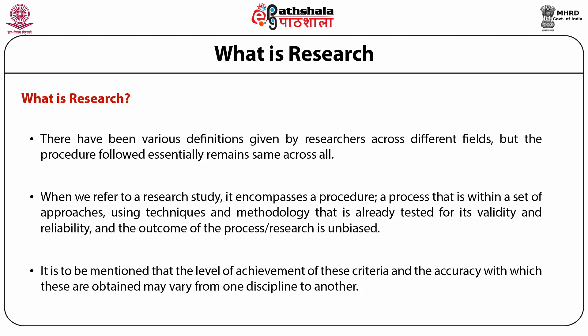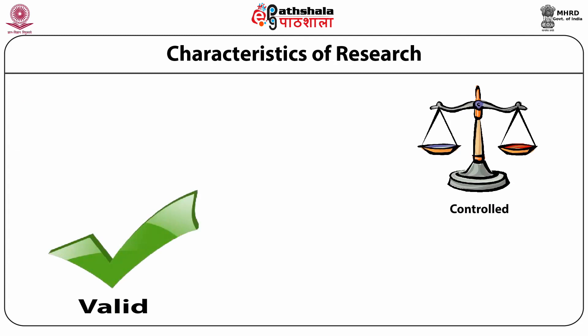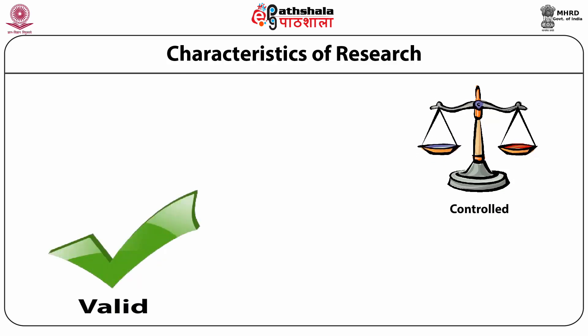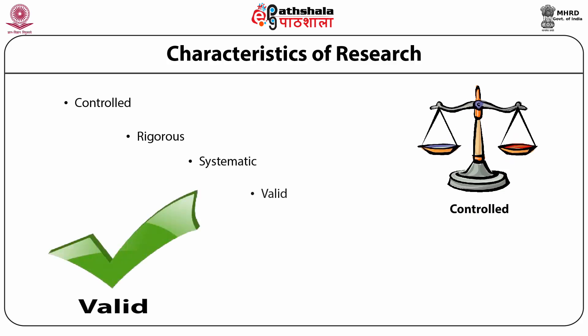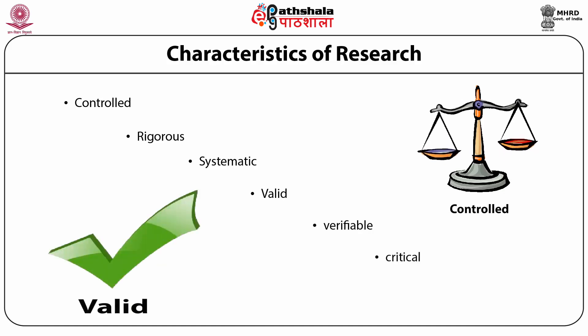However, the complete absence of the above-mentioned criteria does not qualify an activity to be labelled as research. Let us look into the various characteristics of research. Any good research must address the question with the basic characteristics that designate the process as research. These steps must always be controlled, rigorous, systematic, valid, verifiable, critical, as well as empirical.